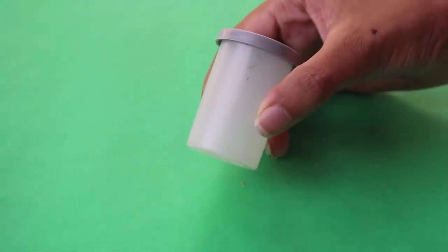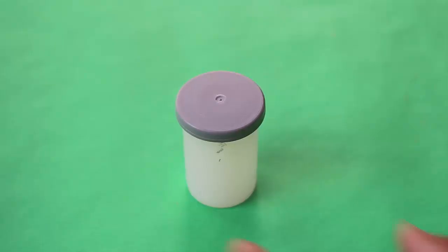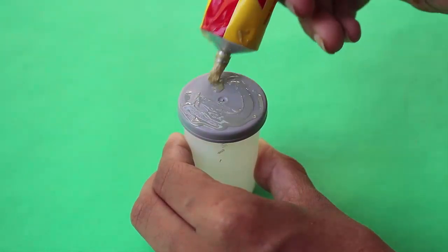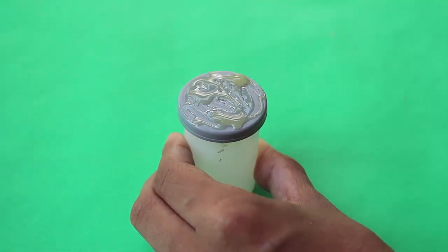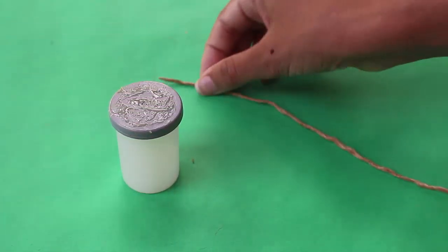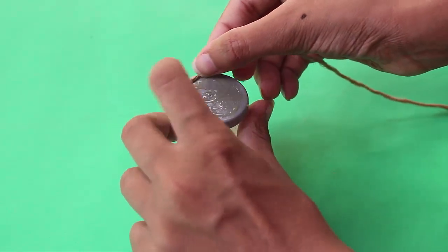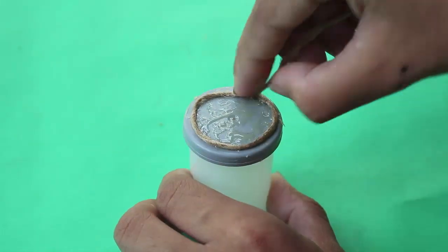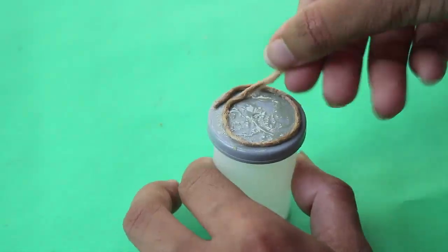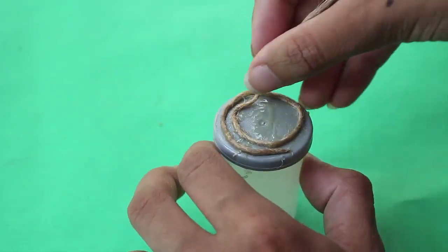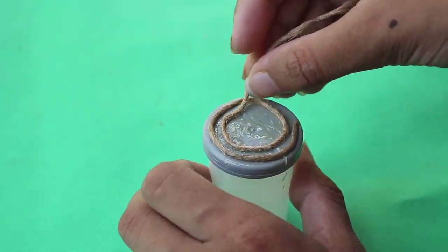First you have to start by applying glue on the cap. Now we have to make the design using a thread. Here we are using a spiral pattern but you can choose the desired design. You can also use rubber bands to make the design.